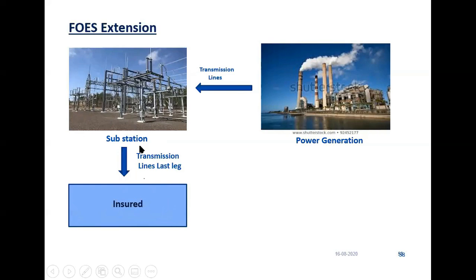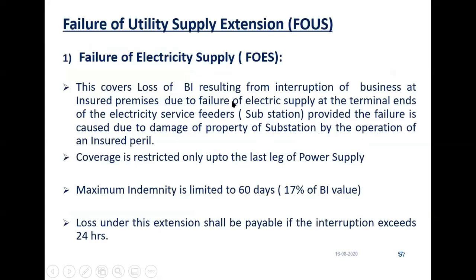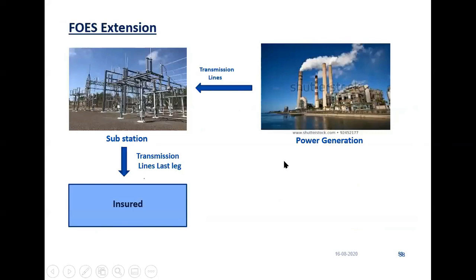An important question: what happens if the transmission line is damaged? That loss is not paid. The wording says the cover applies if power is not available at the terminal end of the power supply feeder, i.e., the substation. The transmission line is not covered. If there is a loss or damage to the transmission line which causes interruption, that loss of gross profit will not be paid under this extension.